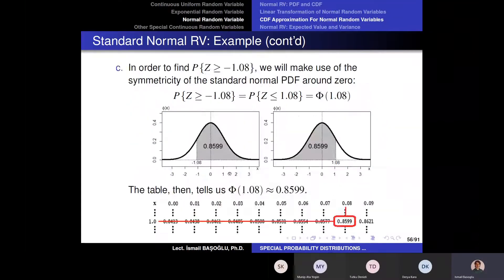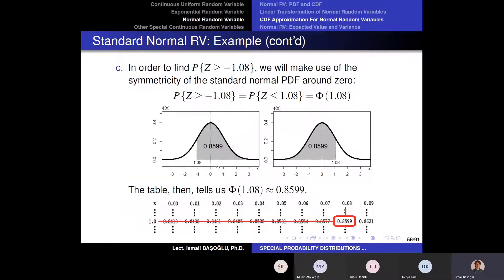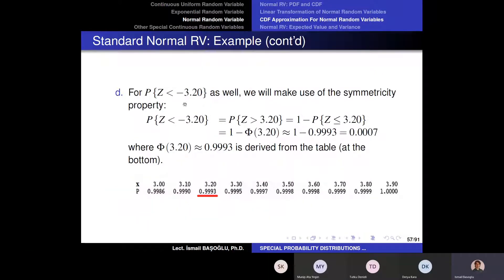Now I have two more questions to solve. What is the probability of Z being less than -3.20? I cannot start another lecture from the middle of a question, so let's finish. For part D, it is actually not very hard: the probability of Z being less than -3.20.